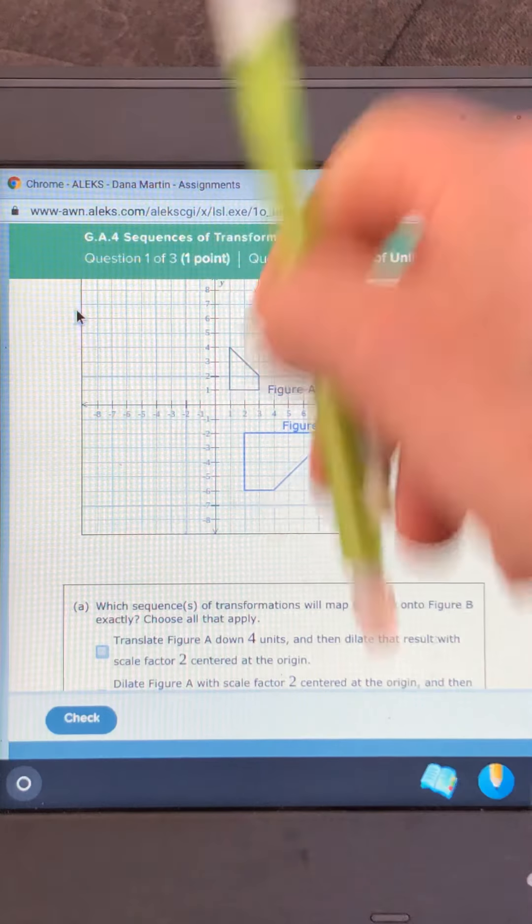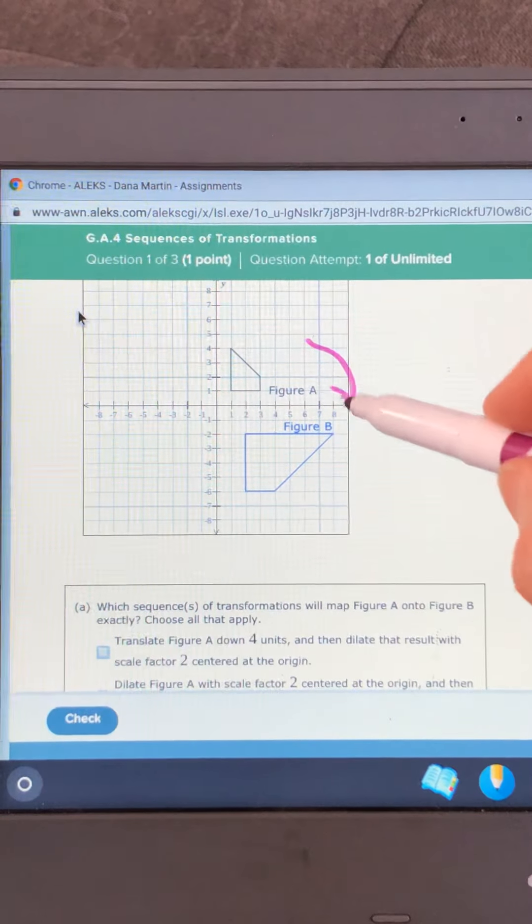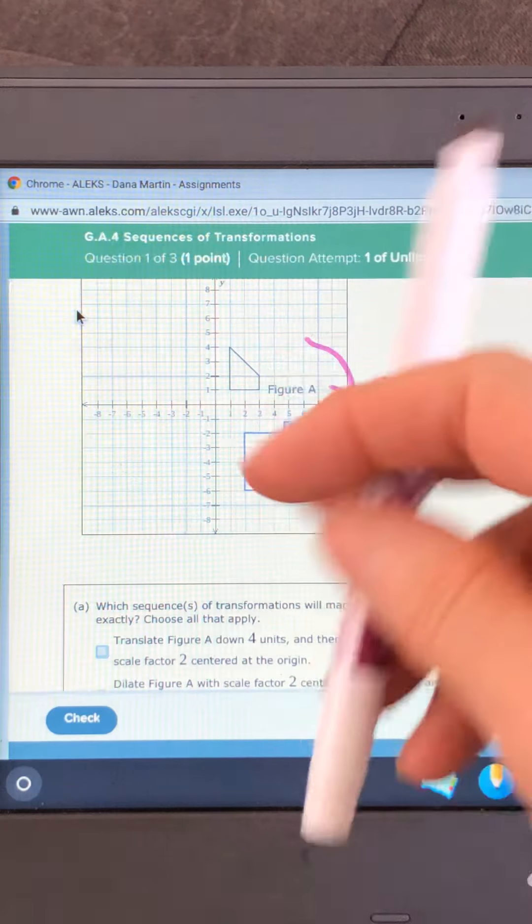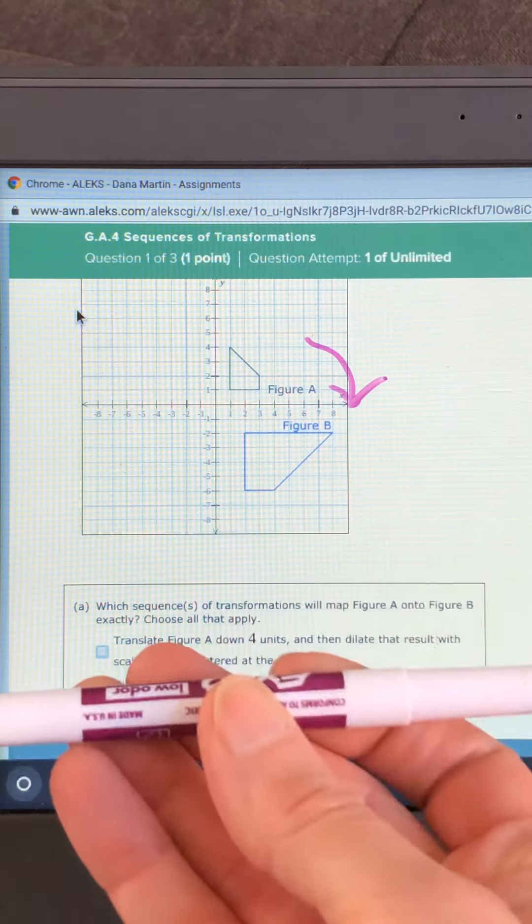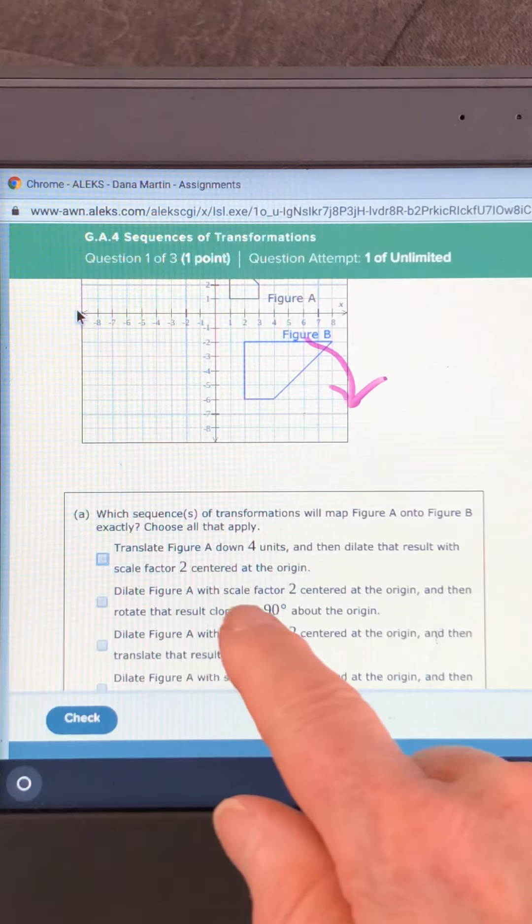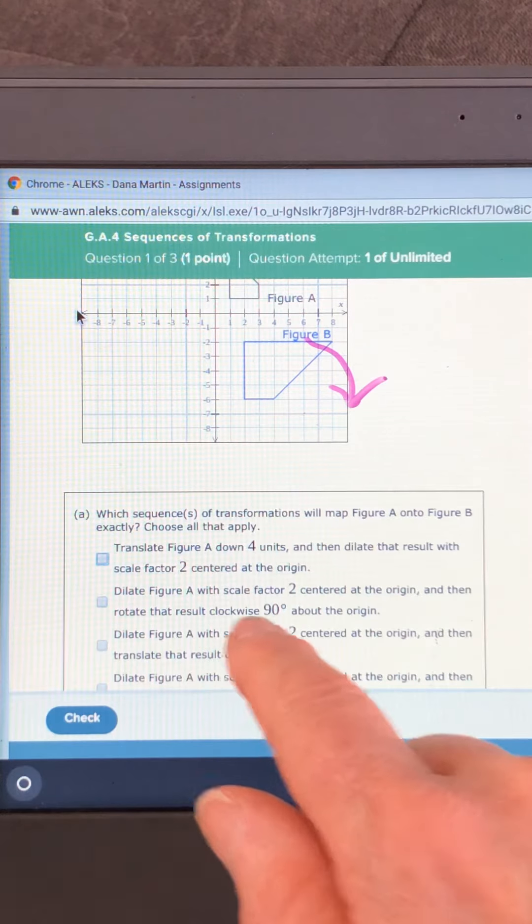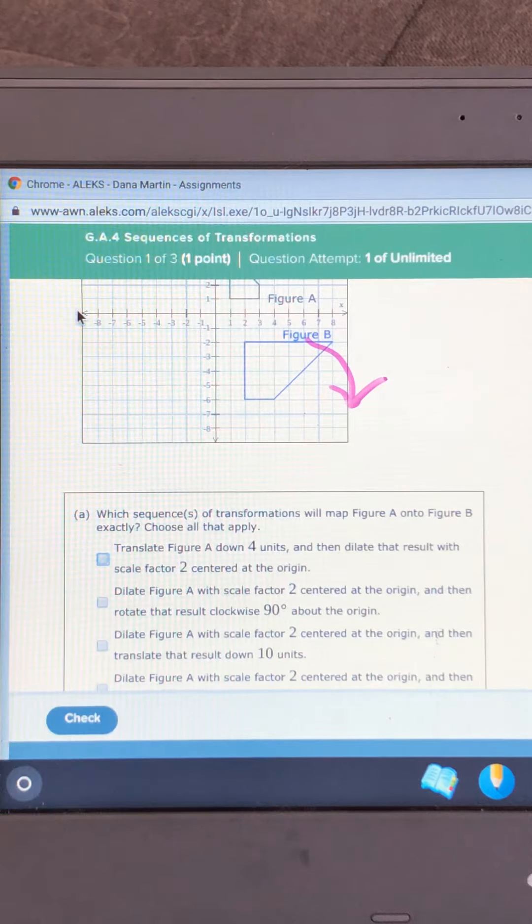It's gonna turn clockwise going this way. And so if we turn it and it's going this way then that's gonna be your answer. It's gonna be dilate figure A with a scale factor of two and then rotate that result clockwise 90 degrees about the origin.